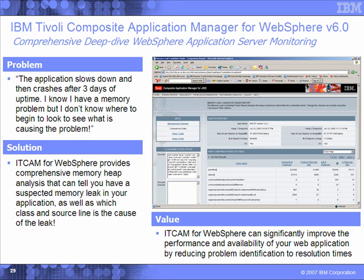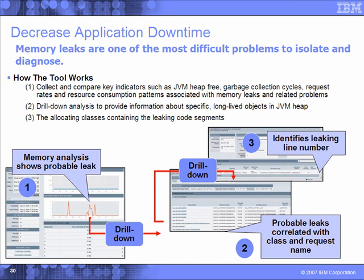This can significantly improve performance and availability by reducing problem identification to resolution times. How does ITCAM for WebSphere decrease application downtime? With memory analysis, we first show a probable leak — for example, we see the JVM heap size rising while the number of requests stays constant. We drill down into that data, then look at probable leaks correlated with class and request names. We can see requests being made in real time, sort them by which are taking the longest, then drill down to identify the methods and even the leaking line number for the problem.